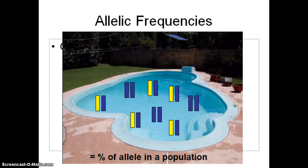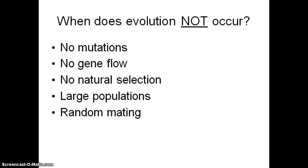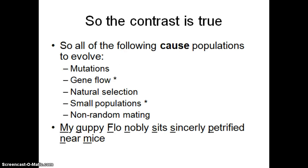A lot of textbooks talk about when evolution doesn't occur, and I remember finding that really confusing — there are two negatives there. So I turned it around to list the things that cause evolution to occur: mutations, gene flow, natural selection, small populations, and non-random mating.